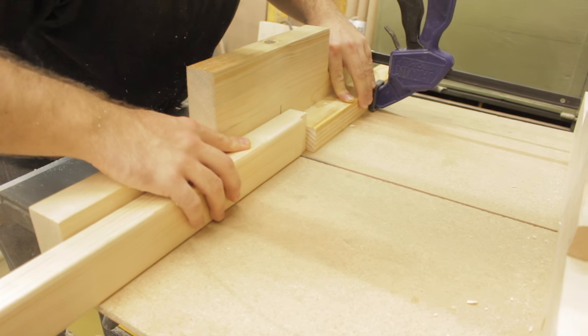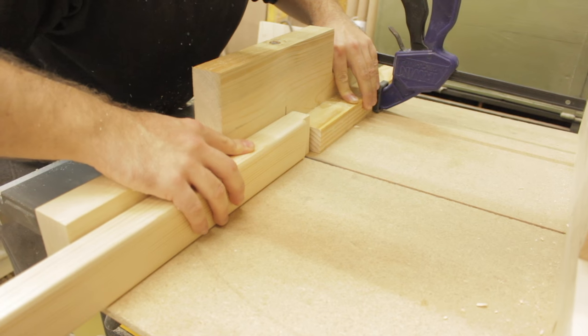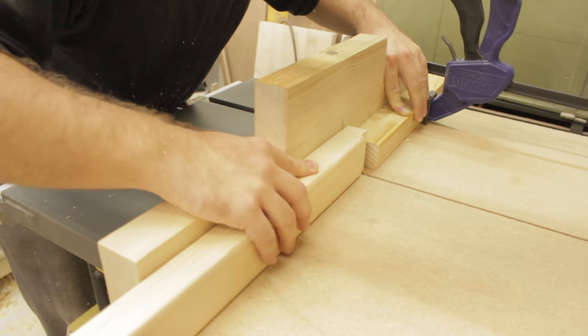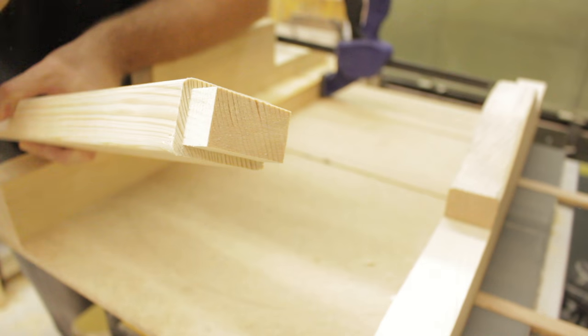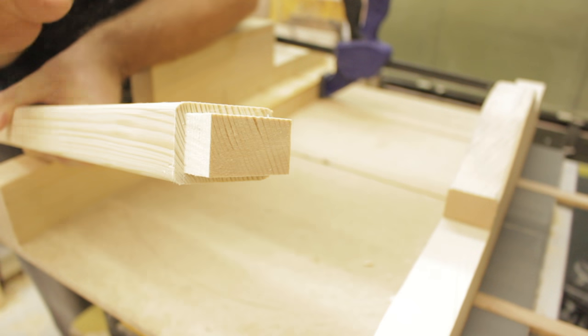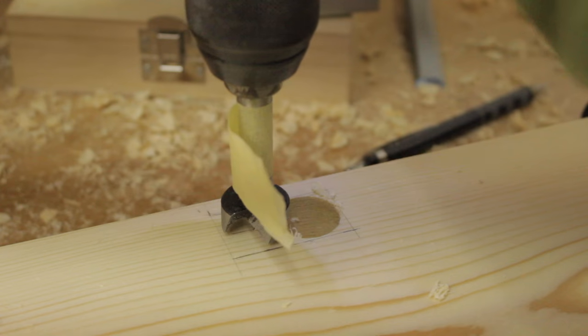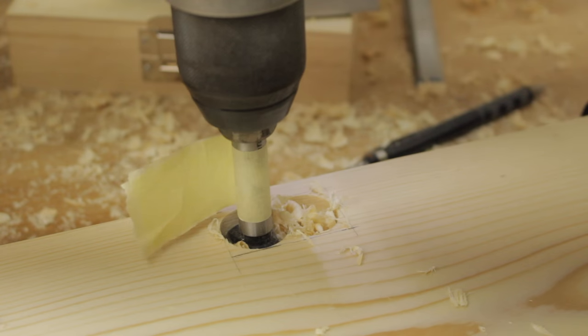Then we made the ladders. We decided to join them with a mortise and tenon, but without gluing them. So I made the tenons on the table saw and Maurice made the mortises on the posts.